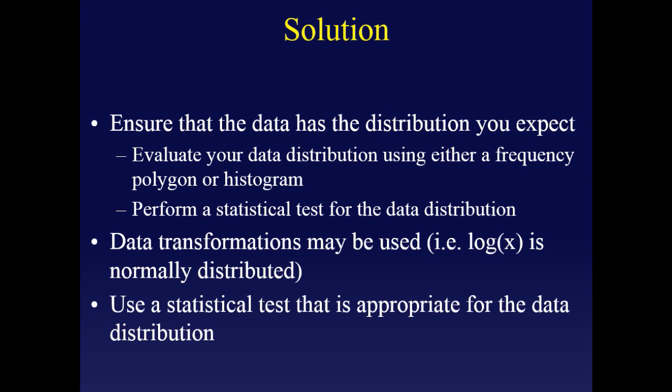Nonparametric tests are very forgiving relative to parametric tests. They make fewer assumptions and tend to be applicable in a wider variety of instances. Wilcoxon tests are really easy to apply and are applicable in many instances where the student's t-test and other parametric tests are not valid.